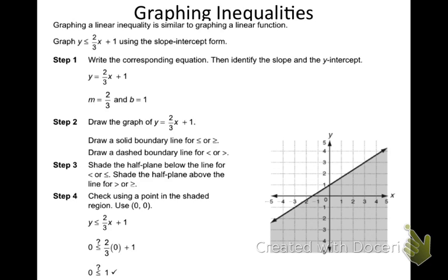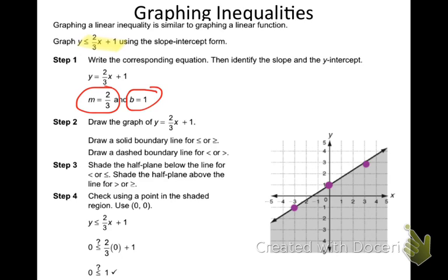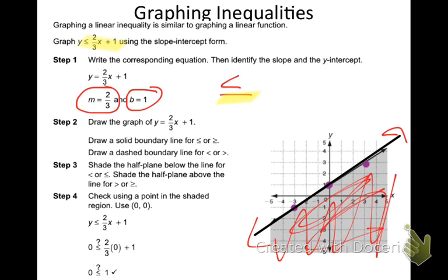Graphing inequalities — we're going to graph inequalities like this: y is less than or equal to 2x plus 1. In order to graph, I need a y-intercept and a slope. I start at my y-intercept, positive 1, with a slope of 2 thirds. From there I go up 2 over 3, up 2 over 3, and connect my dots. It is a solid line because it's less than or equal to — that equal to part means solid line. And it's less than, so I shade the area lower than it.